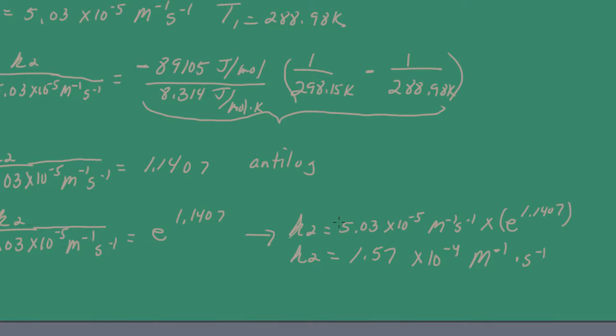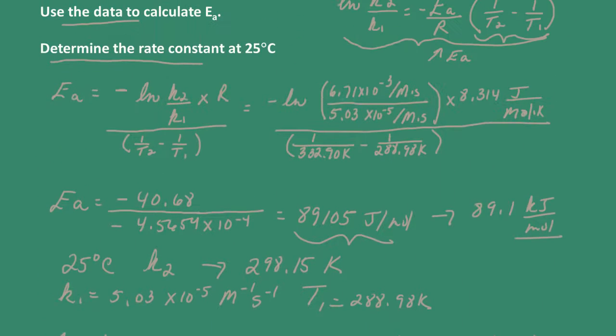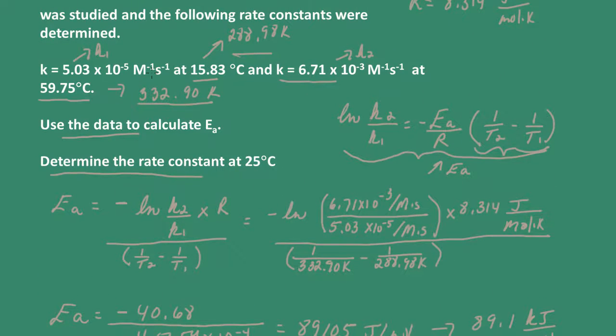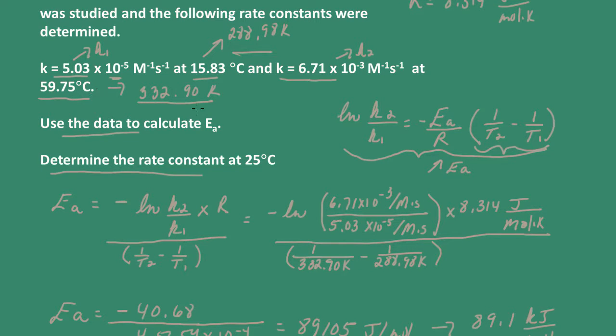We ask, does the answer make sense? Let's go back and look. The data we used, this here was our K1, and that was at 288.98 Kelvin at 5.03 times 10 to the negative 5. We know that at 332.9 Kelvin, K is 6.71 times 10 to the negative 3. And 25 degrees Celsius, or 298.15 Kelvin, is in between these two temperatures. So yes, 1.57 times 10 to the negative 4 certainly seems like a reasonable answer.